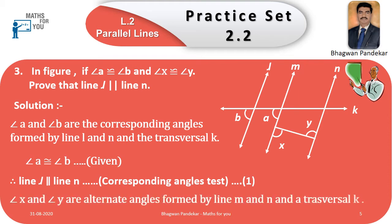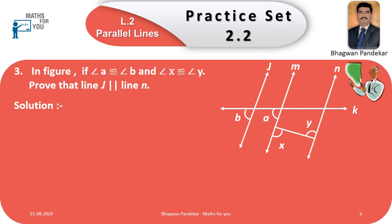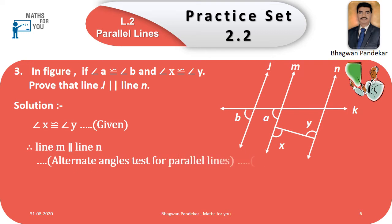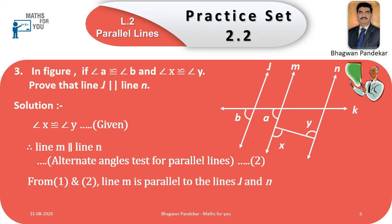Angle X and angle Y are the alternate angles formed by line m and n and transversal k. Angle X ≅ angle Y — given information. Therefore, line m is parallel to line n by the alternate angle test for parallel lines. This is equation two. From equations one and two, line m is parallel to line l and n. Therefore, line l is parallel to line n. This is the final answer and hence the proof.